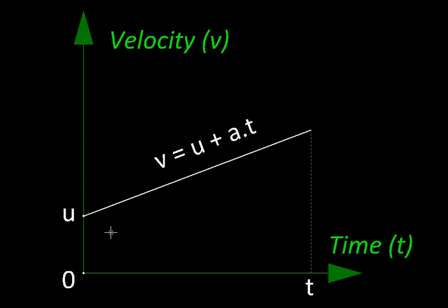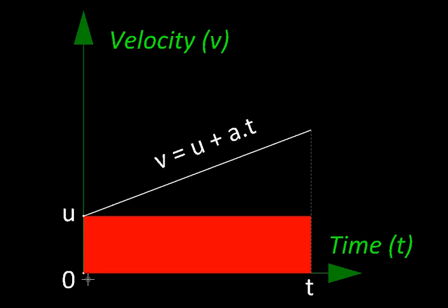And this distance which is now in the shape of a trapezium can be split into two parts. This rectangle over here whose height is u and width is t will have an area of u into t. This is nothing but the distance the body would have covered even if it was not accelerating. Suppose it was moving uniformly then it is just velocity into time.